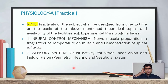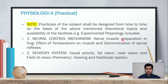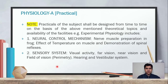Now we go towards the Physiology A practicals. Practicals of the subject shall be designed from time to time on the basis of the above-mentioned theoretical topics and the availability of facilities. Experimental physiology includes neural control mechanisms, nerve muscle preparation in frog, effect of temperature on muscle, and demonstration of spinal reflexes. The second practical covers the sensory system, including visual acuity, far vision, near vision and field of vision, perimetry, hearing, and vestibular system.